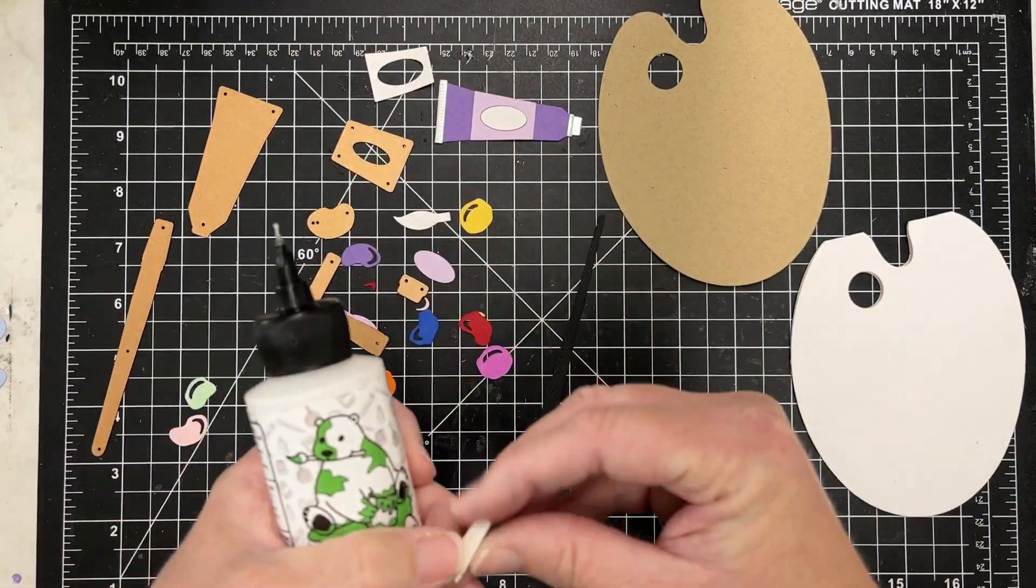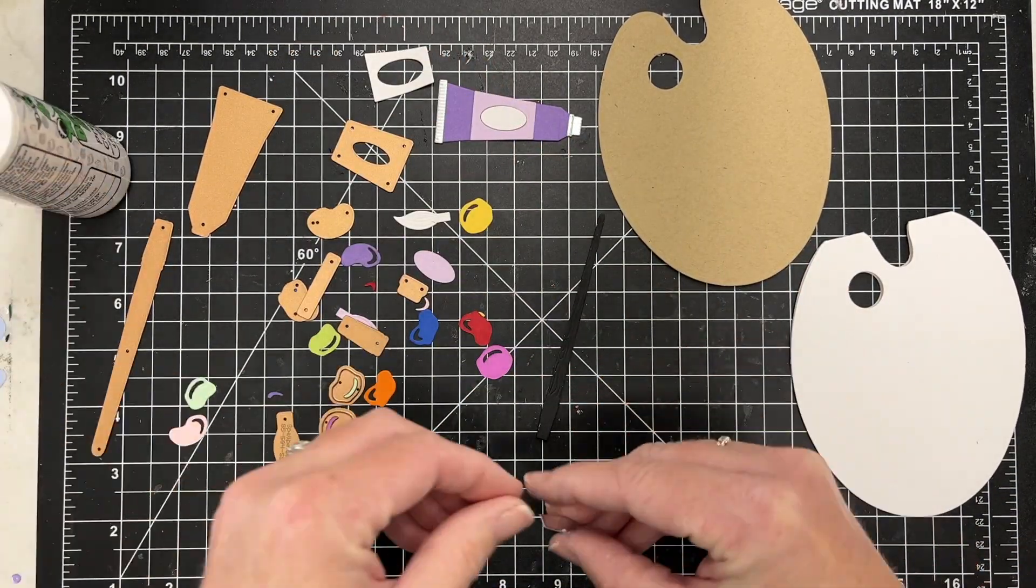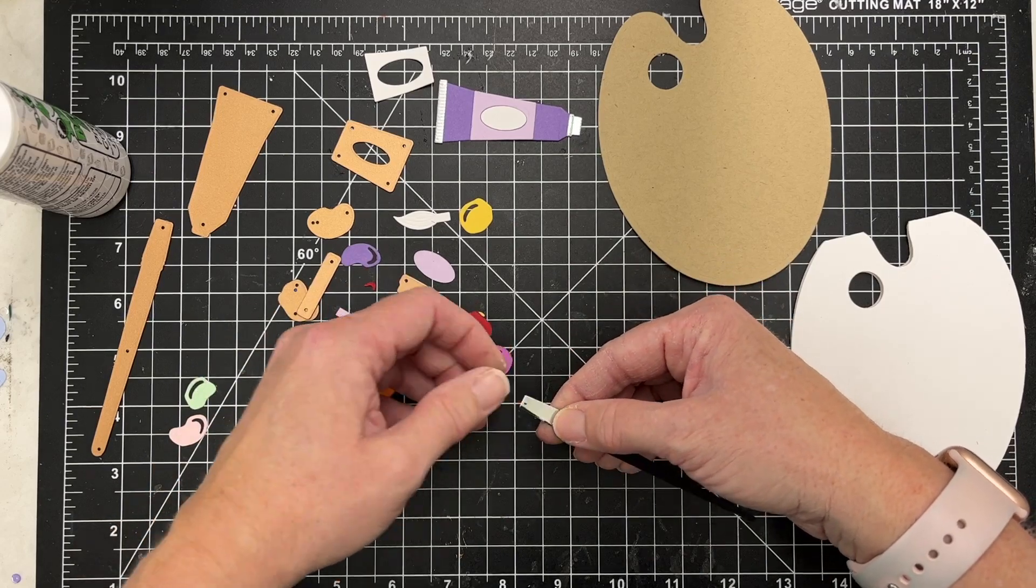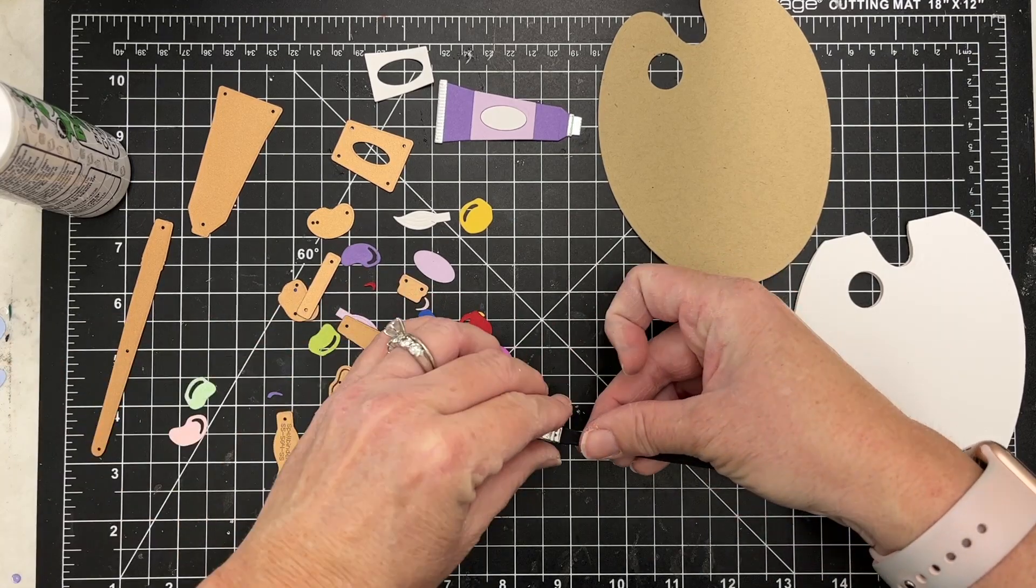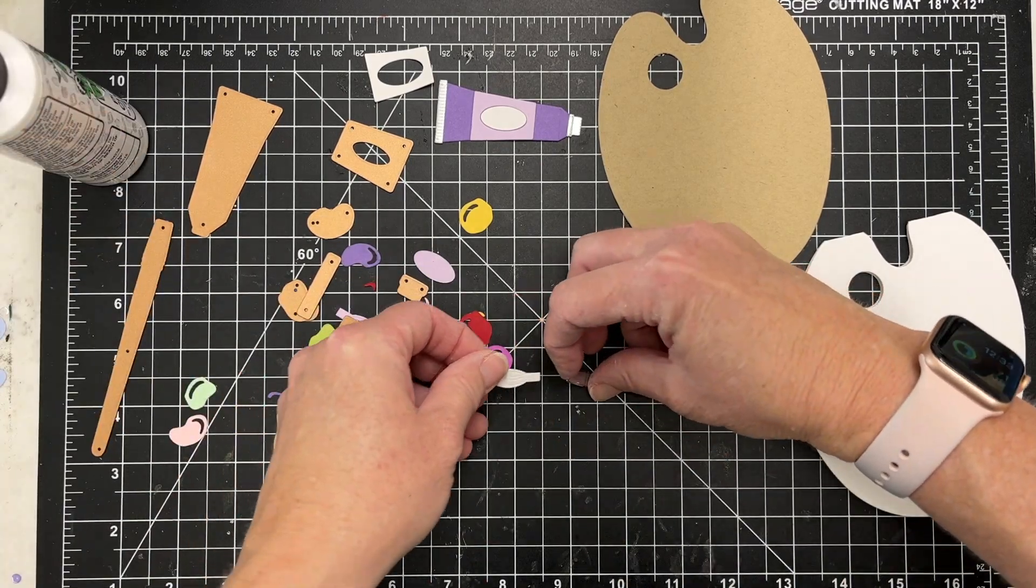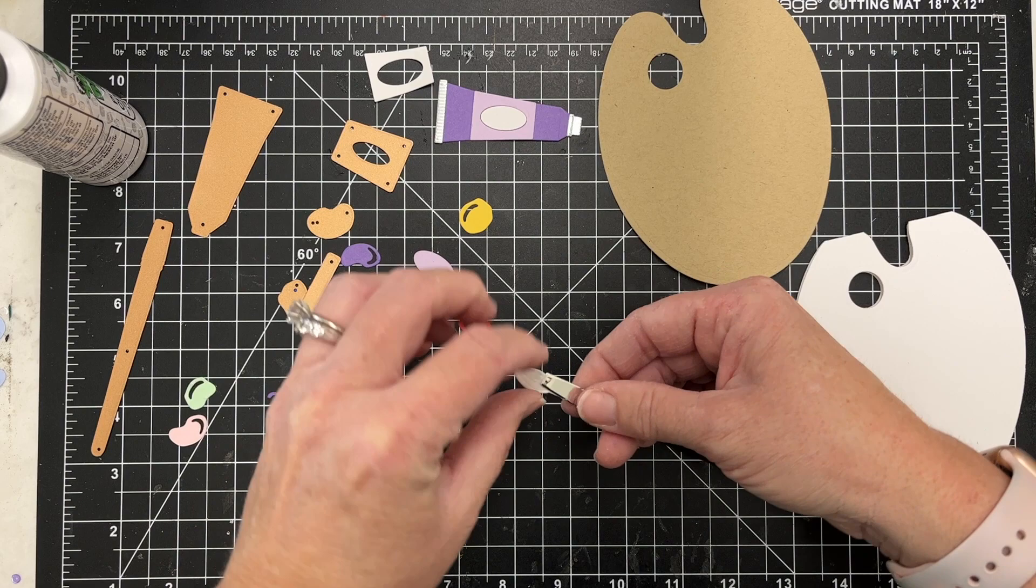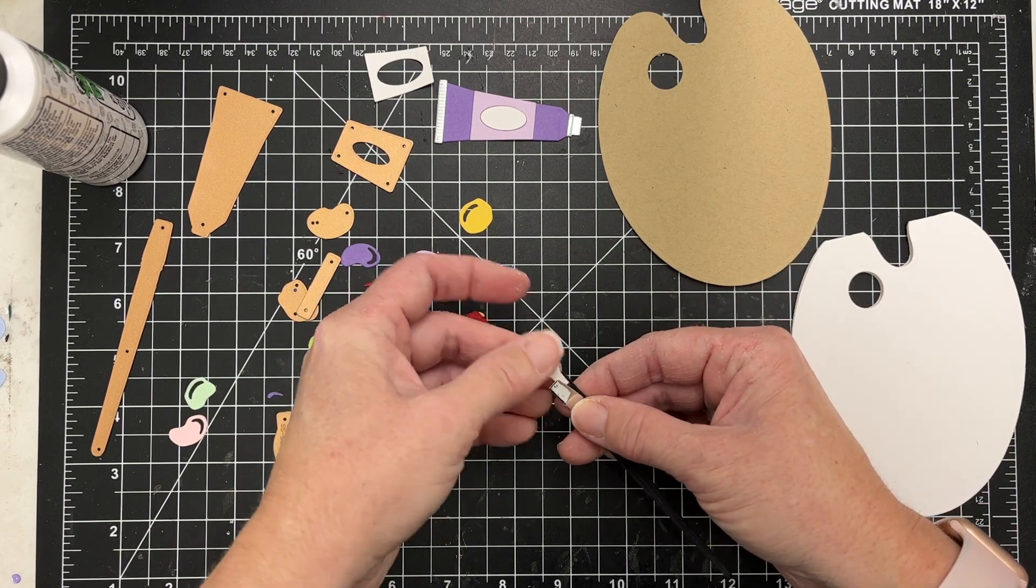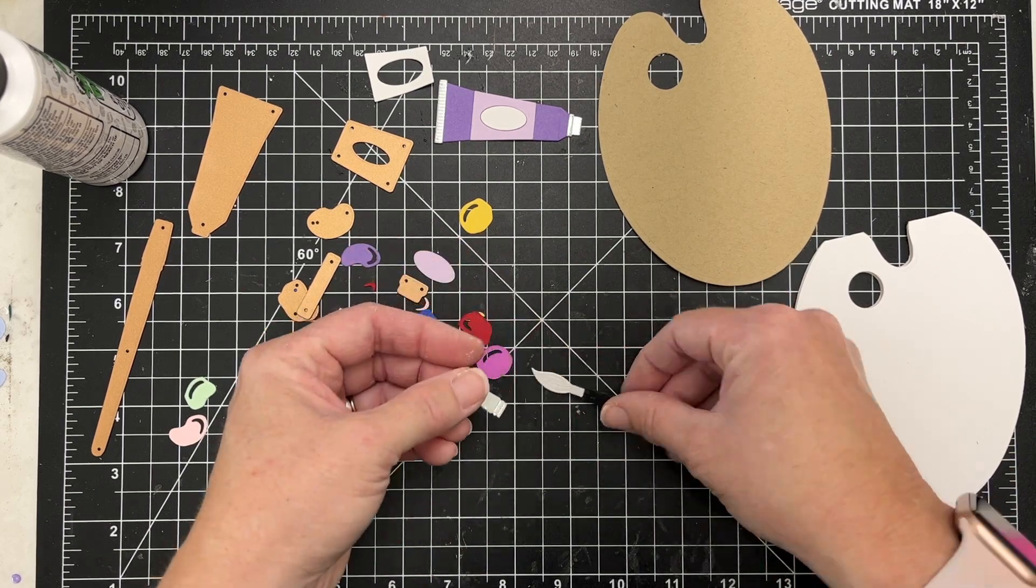Next I'm going to put my paint brush together. I decided to do this in black. It's a little hard to see on camera but there is kind of some wood grain detail in this die cut. But I should have glued down my little paint brush first, the actual kind of nib, so I'm just going back and correcting that.